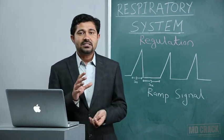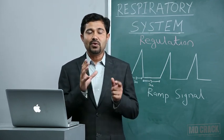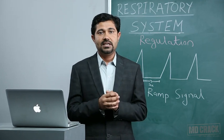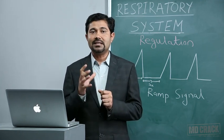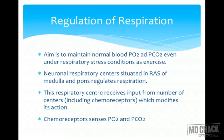The respiratory centers, as with the other vital centers, are located in the pons and medulla — the reticular activating system of the pons and medulla. These respiratory centers in turn receive input from many other centers and they act on the feedback information received by them. The main input is from the chemoreceptors.